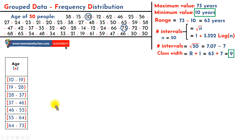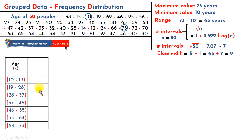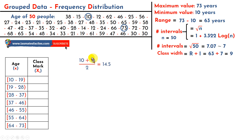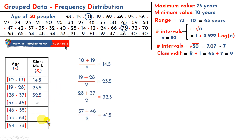Now we are going to build our second column: the class mark. The class mark is simply the midpoint of each interval. For example, what value is exactly in the middle between 10 and 19? It's easy to calculate: 10 plus 19 divided by 2 equals 14.5. I do the same for all intervals — I add the limits and divide the result by 2.